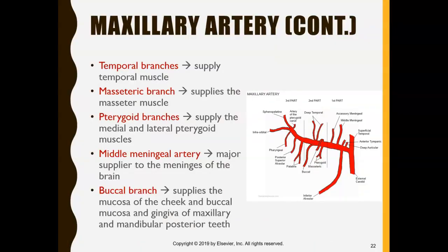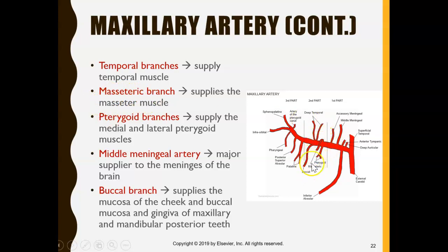Since there are so many branches of the maxillary artery, some other branches include the temporal branch, which supplies the temporal muscle, and the masseteric branch, which supplies the masseter muscle — a muscle of mastication used for chewing. There are many different branches stemming from the maxillary artery, each supplying different areas.